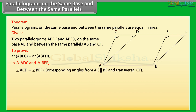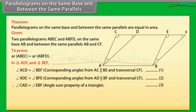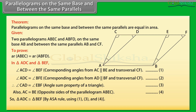In triangle ADC and triangle BEF: angle ACD equals angle BEF because these are corresponding angles from AC parallel to BE and transversal CF — mark it as 1. Angle ADC equals angle BFE because these are corresponding angles from AD parallel to BF and transversal CF — mark it as 2. Therefore, angle CAD equals angle EBF by the angle sum property of a triangle — mark it as 3. Also, AC equals BE as opposite sides of parallelogram ABEC — mark it as 4. So, triangle ADC is congruent to triangle BEF by ASA rule using 1, 3, and 4. Therefore, area of ADC equals area of BEF because congruent figures have equal areas — mark it as 5.